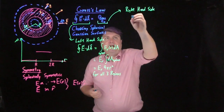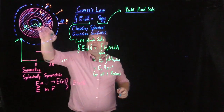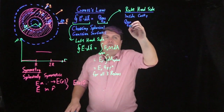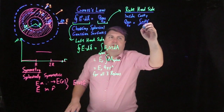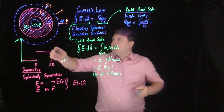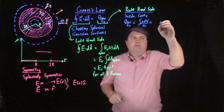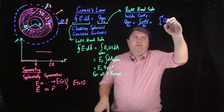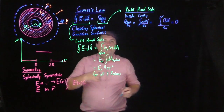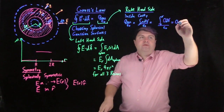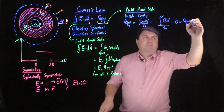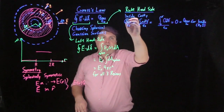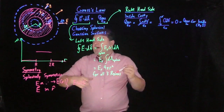For the right-hand side, starting with Region 1 — inside the cavity — Q_enclosed over ε₀ equals the integral of ρ dV over ε₀. We integrate from 0 to little r, and the charge density in this region is 0, so Q_enclosed over ε₀ equals 0 for Region 1, inside the cavity.